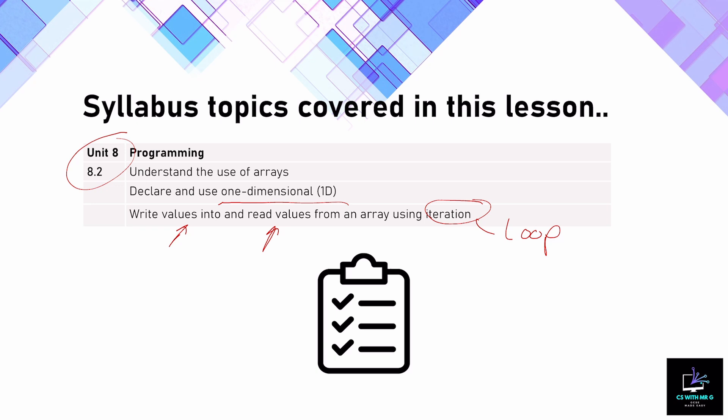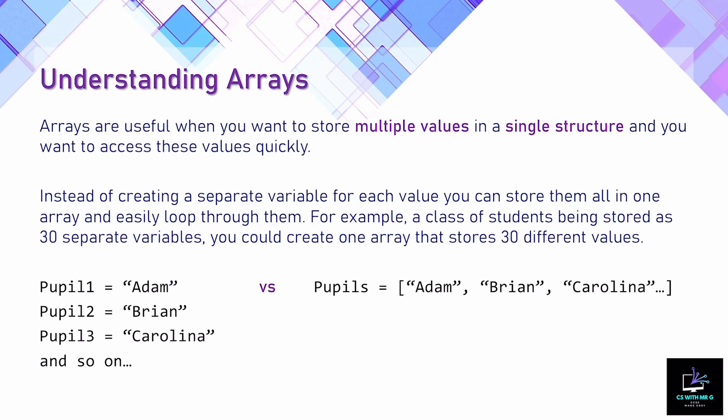We're going to look at some standard algorithms that we need to be aware of for the paper two exam and for programming in general. In unit 8 I'm going to go through all the techniques we've looked at so far but using actual high-level programming languages — in our case, Python. So far we've covered the basics in pseudocode, and hopefully you've managed to follow along so that when we come to unit 8 it's going to be much easier to understand.